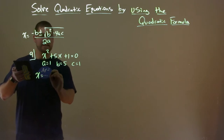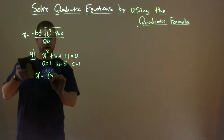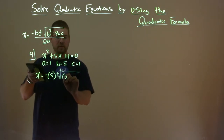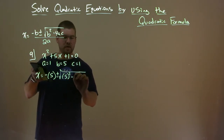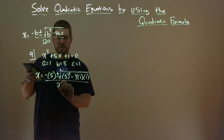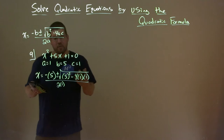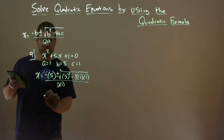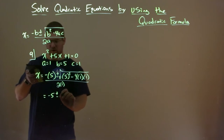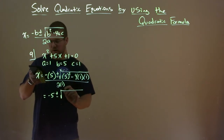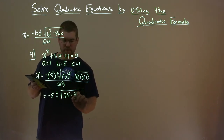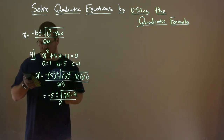So x equals negative b, so we have negative 5 plus or minus the square root of b squared — 5 squared — minus 4 times a, which is 1, times c, which is 1, all over 2 times 1. Now we just need to simplify this. Negative 5 out front, plus or minus the square root — 5 squared is 25, 4 times 1 times 1 is minus 4, all over 2, since 2 times 1 is 2.